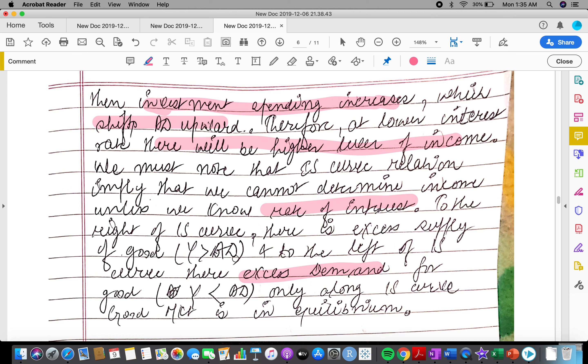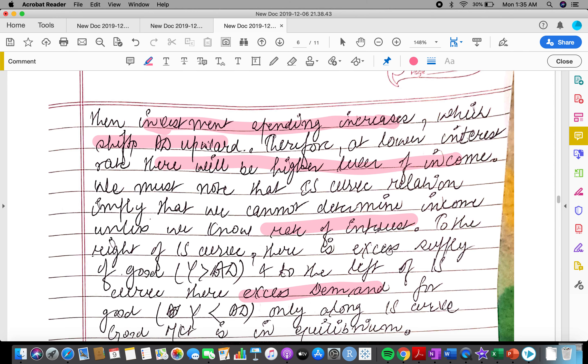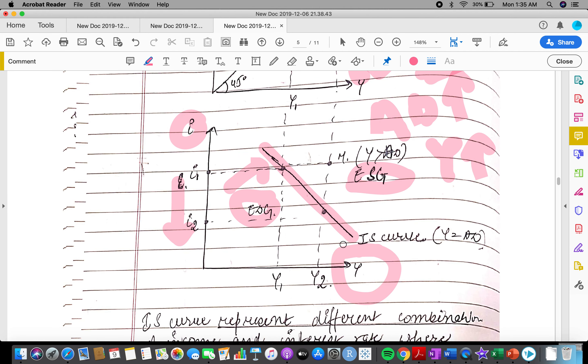As I've already told you, to the right of IS curve, Y is greater than AD. And to the left, there is excess demand for goods, that means Y is less than AD.